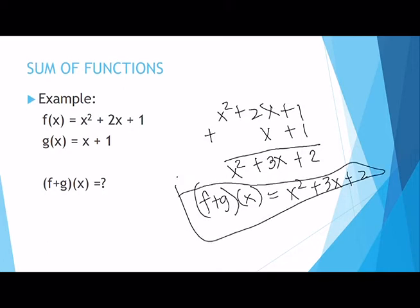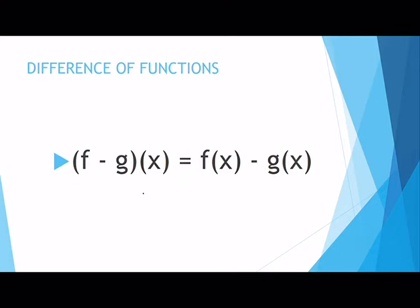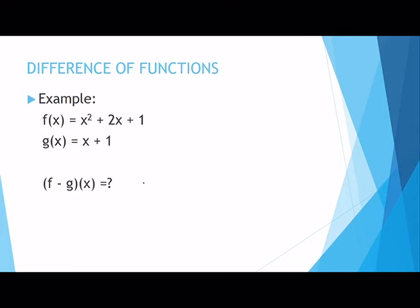Next we go to the difference of functions — simply subtracting your functions. The notation is (f − g)(x) = f(x) − g(x). You have to remember to follow the order of the function names because subtraction has no commutative property, meaning we cannot interchange the placement of f and g. Whatever letter comes first must be the first number you subtract from.